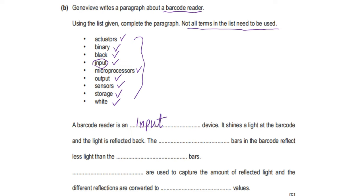It shines light at the barcode and the light is reflected back. The black bars in the barcode reflect less light than the white bars. Sensors are used to capture the amount of reflected light, and the different reflections are converted to binary values.